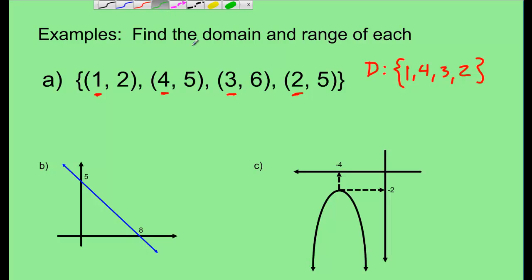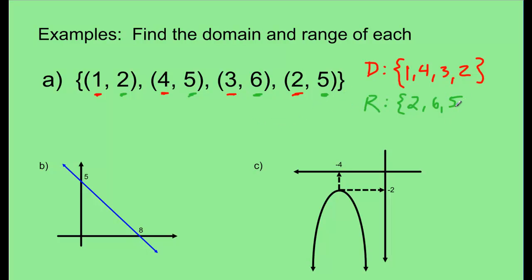For the range, we use capital R, put a colon, and start the list in set brackets. The possible y values are 2, 5, 6, and another 5. Because 5 is listed twice, I don't need to list it again — 5 is already there. So there are only 3 possible values y could be: 2, 6, or 5. Notice there are 4 values for the domain and only 3 for the range — that's okay. They don't have to be the same number.